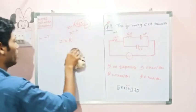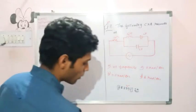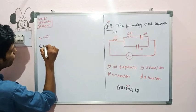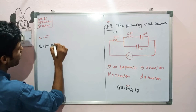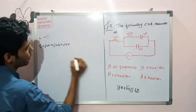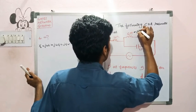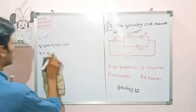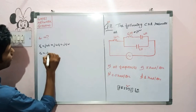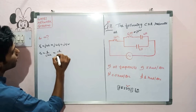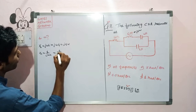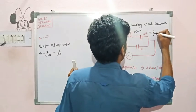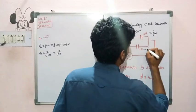First, we convert the element values into ohmic values. XL = j·omega·L = j4ω. For the capacitor, XC = 1/(j·omega·C). Since C = 1, XC = 1/(jω).